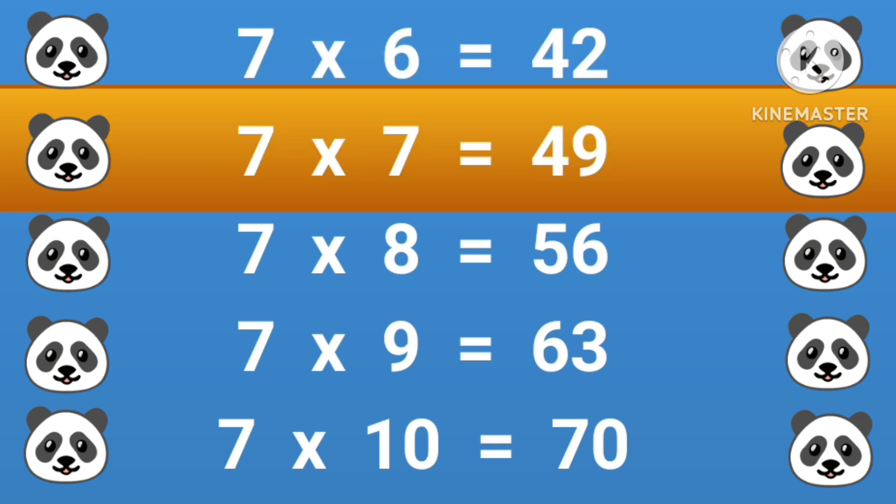7 times 7 equals 49, 7 times 8 equals 56, 7 times 9 equals 63, 7 times 10 equals 70.